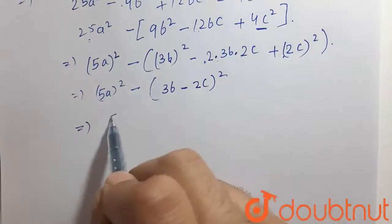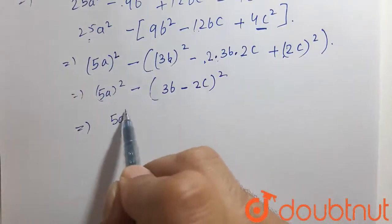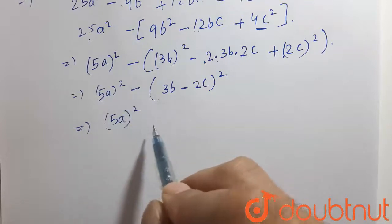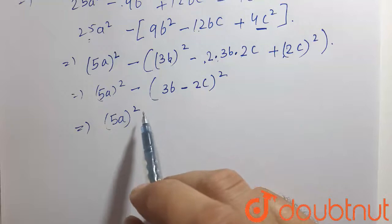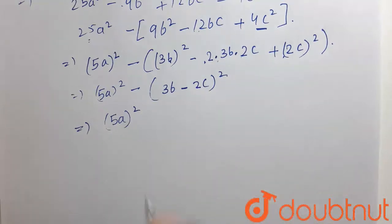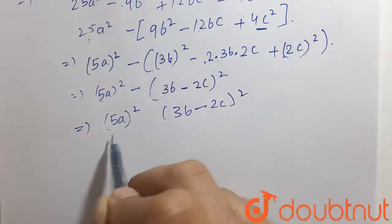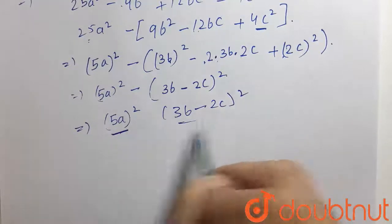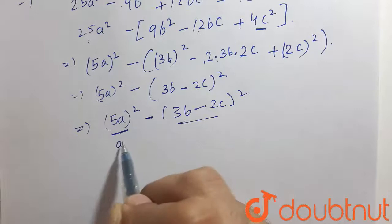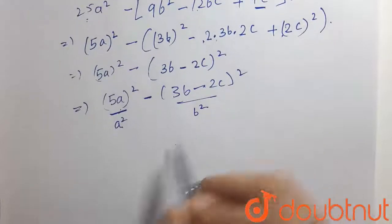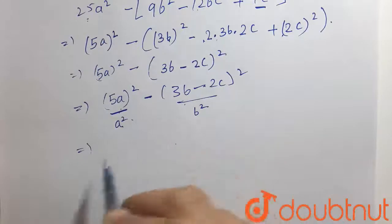From here, this is 5a whole square and it can be written as a, here we can see that this is a square and this is b square. Let, this is a square and this is b square. So, this becomes a plus b and a minus b.